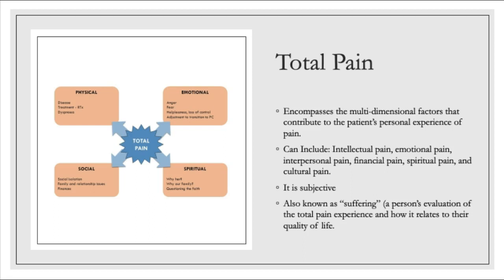Total pain encompasses the multi-dimensional factors that contribute to a patient's personal experience of pain. When interviewing palliative care and hospice patients about their pain, we're not just asking them to rate it on a scale of one to ten — the assessment goes much deeper. We want to ask about every aspect because that gives us a better picture of their pain and how we need to treat them. Total pain is very subjective so we need to actively listen. Total pain is also known as suffering — it's a person's evaluation of the total pain experience and how it relates to their quality of life. We need to make sure we're doing everything we can to get them to a point where they can have the life they want.